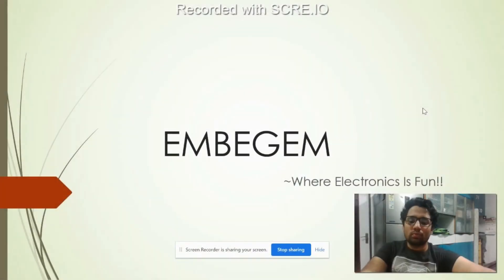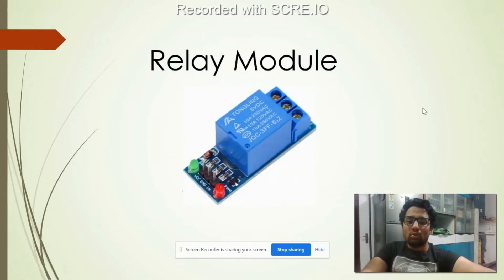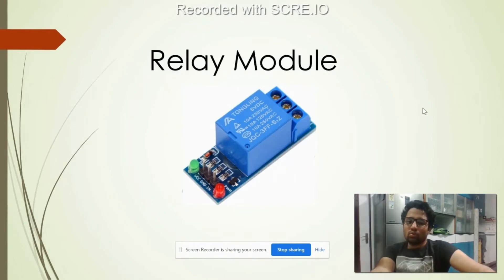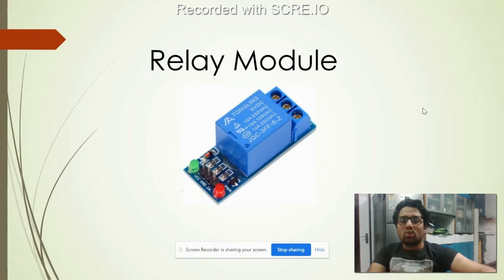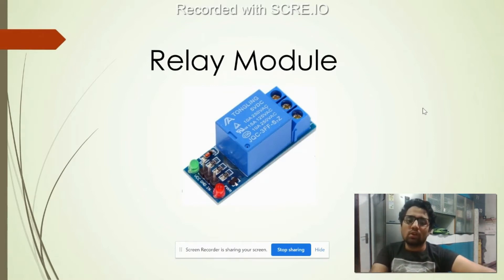Welcome to this tutorial. Today we are going to learn how to build a relay module. Relays come in different voltages — 5V, 6V, 12V, and 24V. Since a microcontroller can output a maximum of 5V DC, to drive a 12V DC relay we have to use some kind of circuit so that we can control a 12V relay through a 5V microcontroller signal.